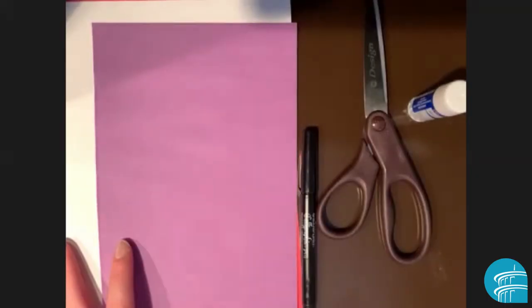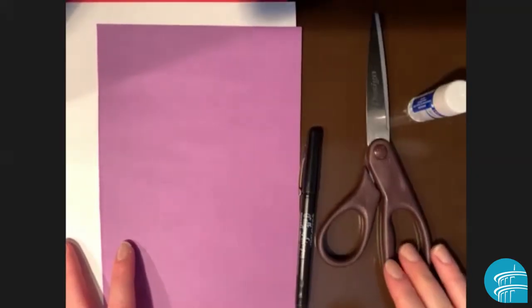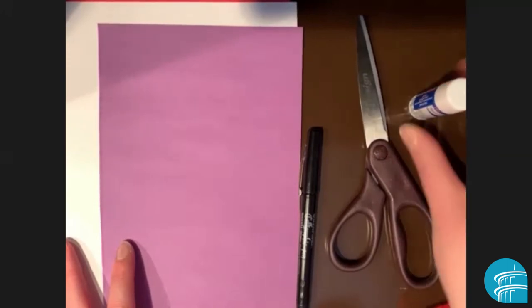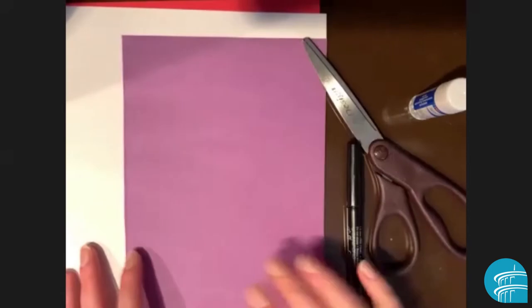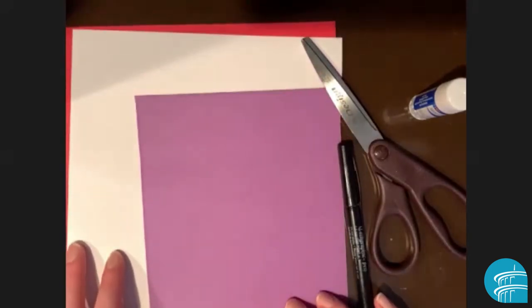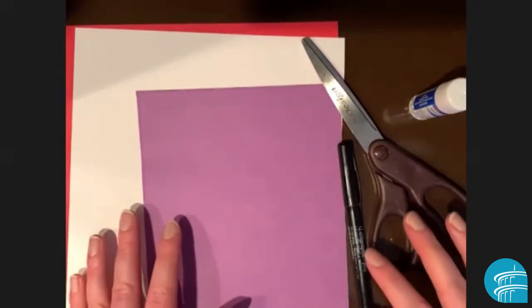First, you're going to need some materials. So today you're going to need a pair of scissors, a glue stick, a pencil or a pen or a marker of some kind, and three different colors of paper. I have purple, white, and red here.